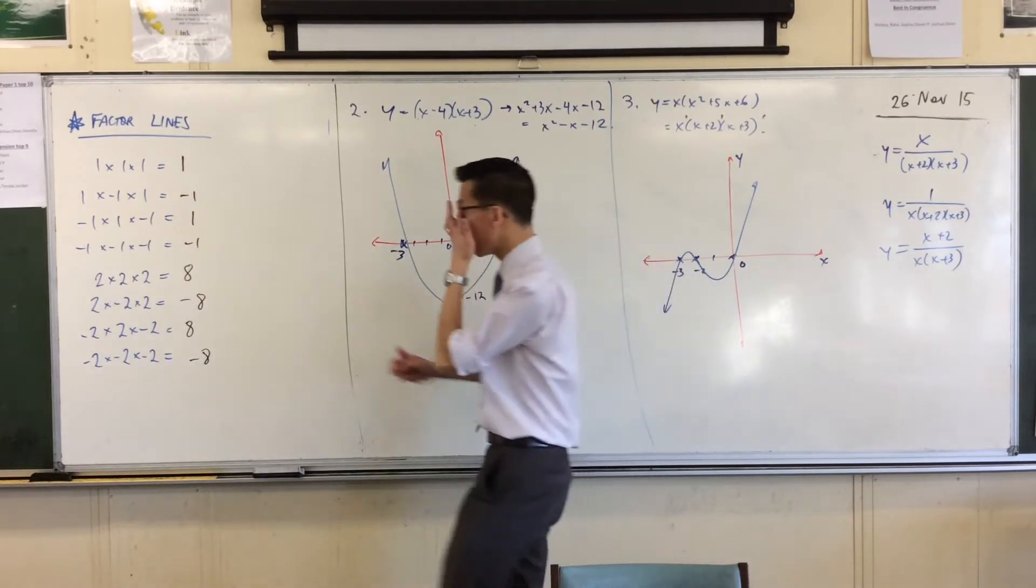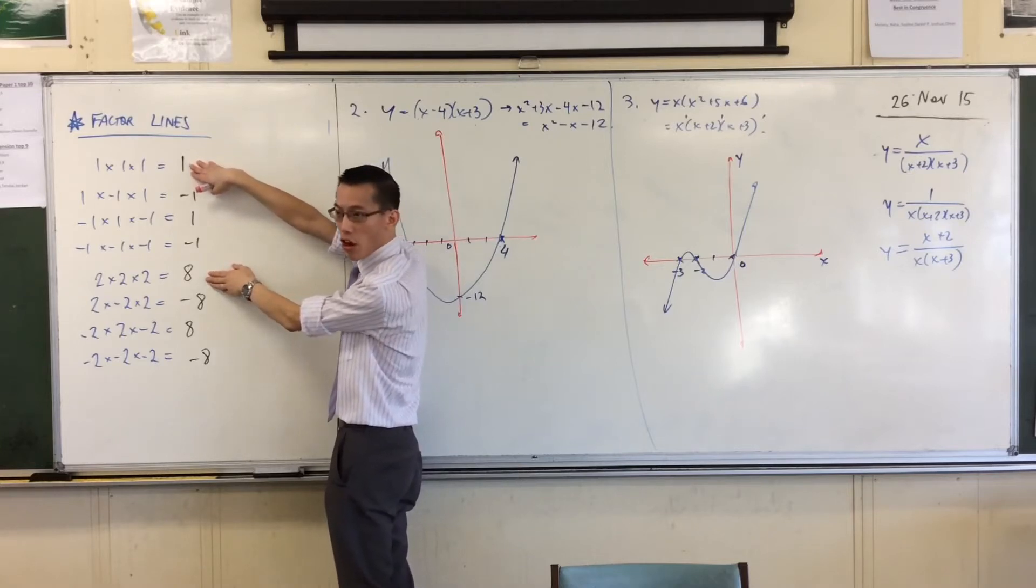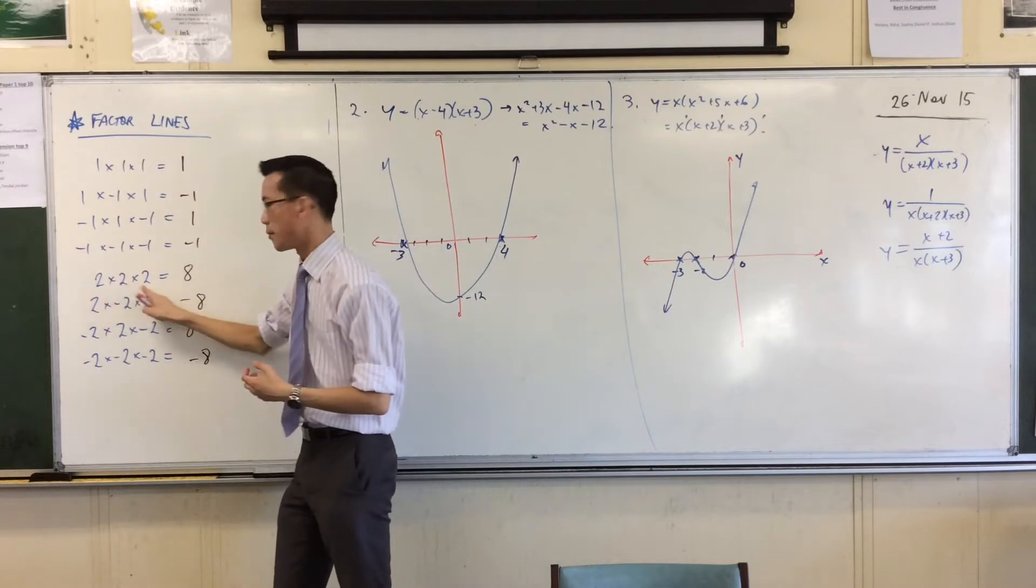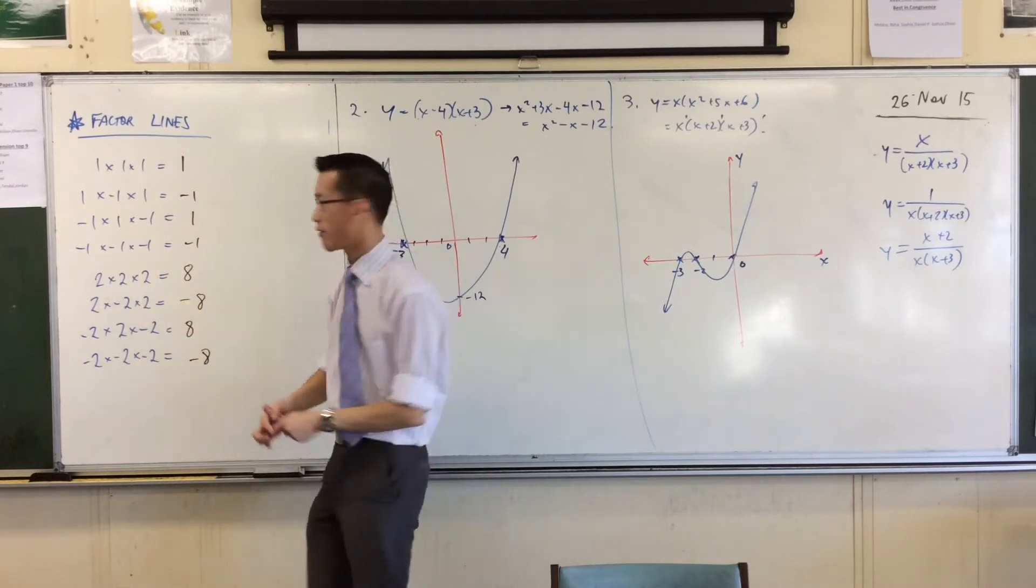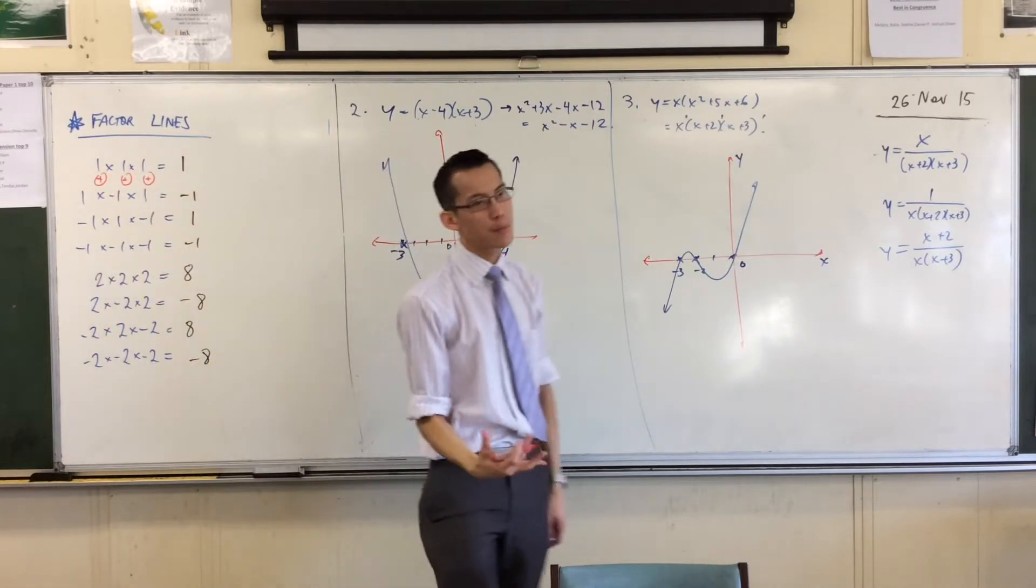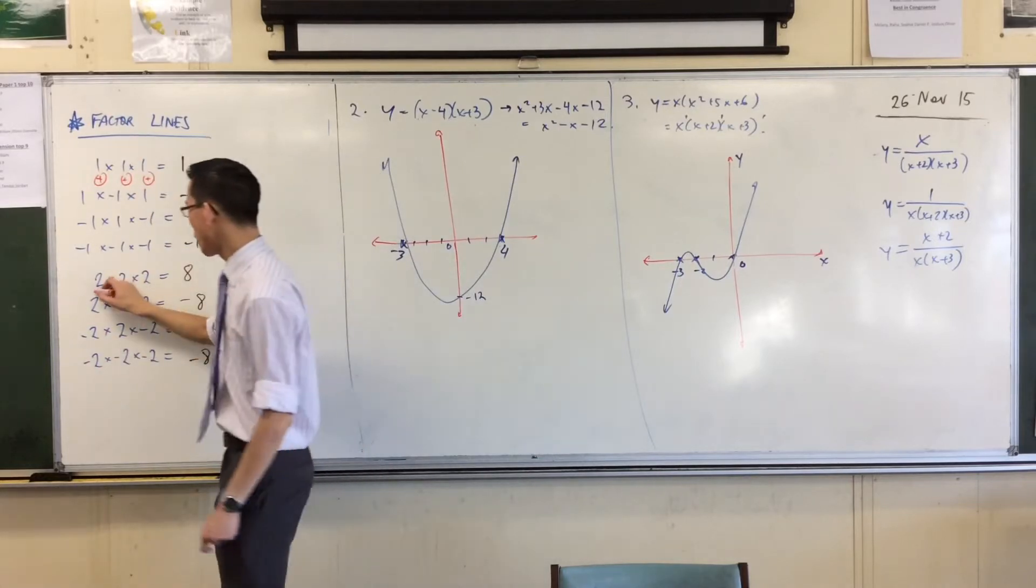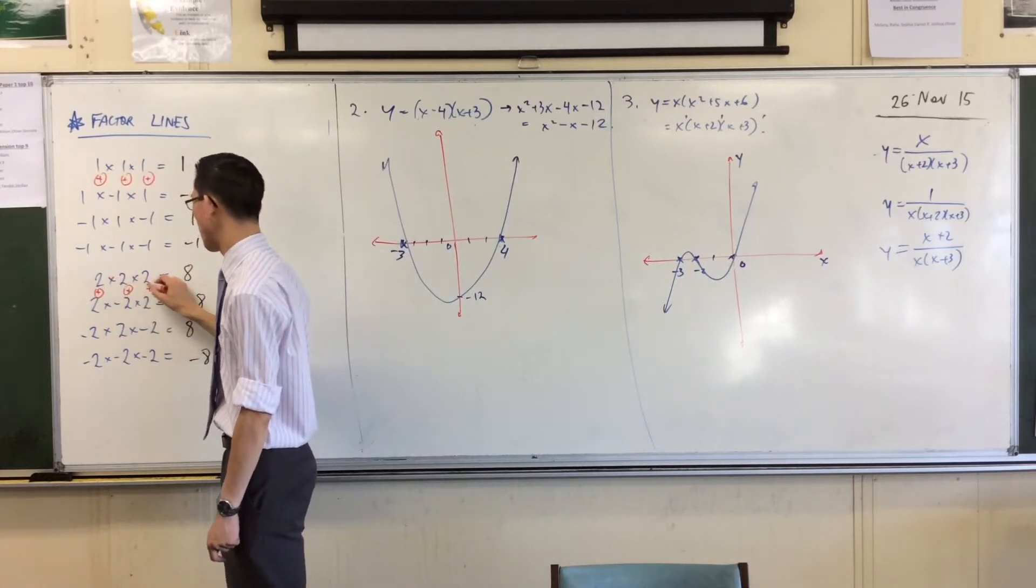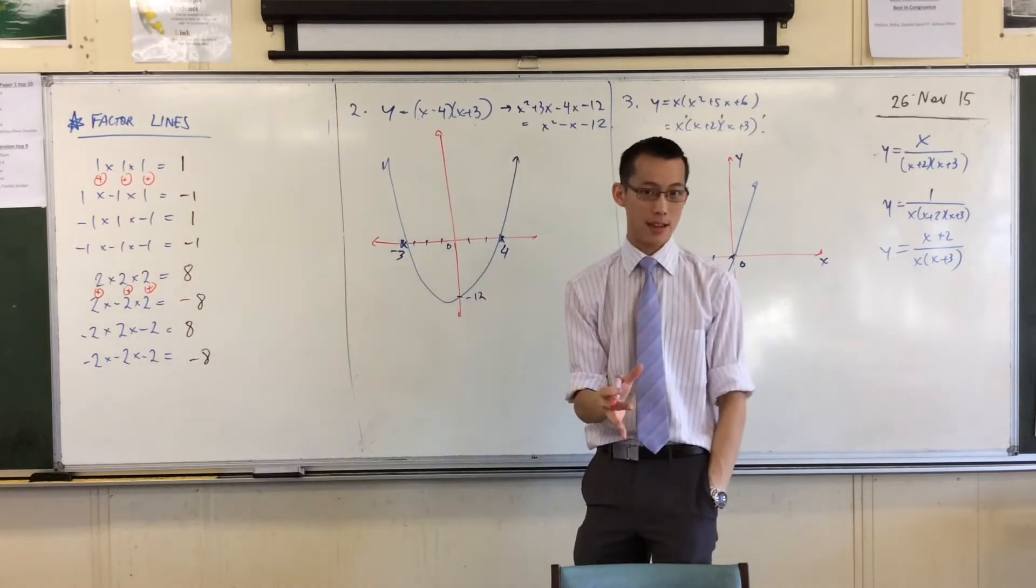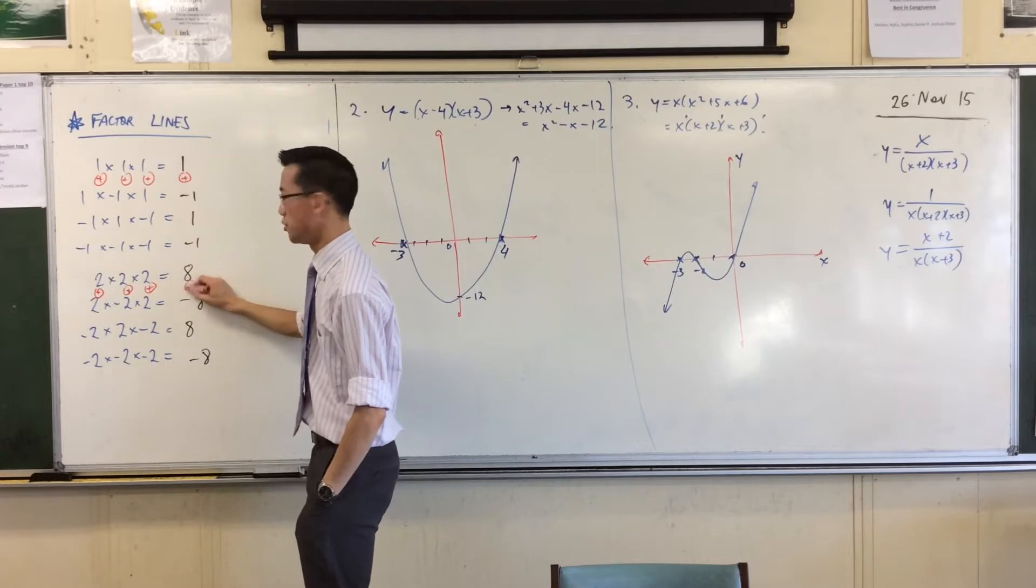So for example, I want you to have a look at these two here. Do you see that what they have in common is that all three numbers at the beginning, all three numbers, they're all positive. So I've got a positive, a positive, and a positive. Now when you multiply three positive numbers together, it doesn't matter if they're all one, or if they're all two, or if they're all different. You know at the end what you must end up with is also positive. Do you agree with that?